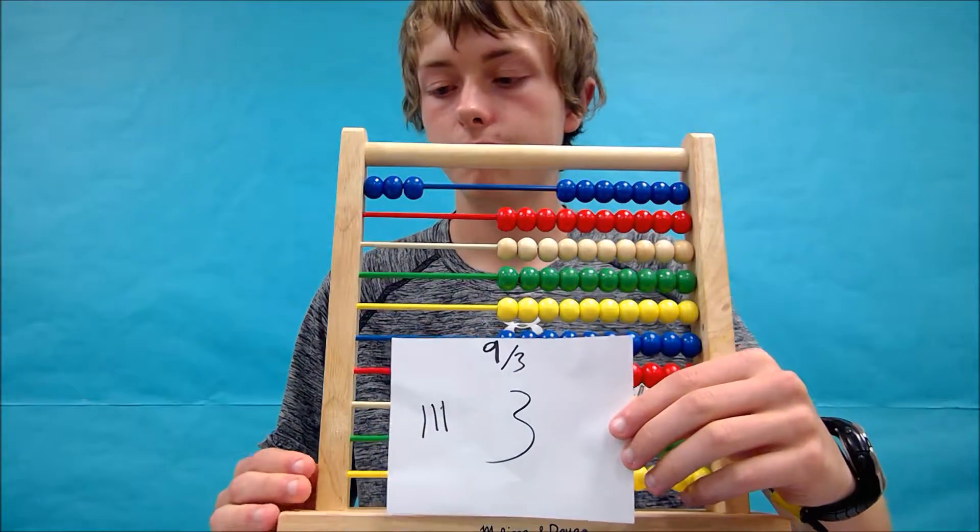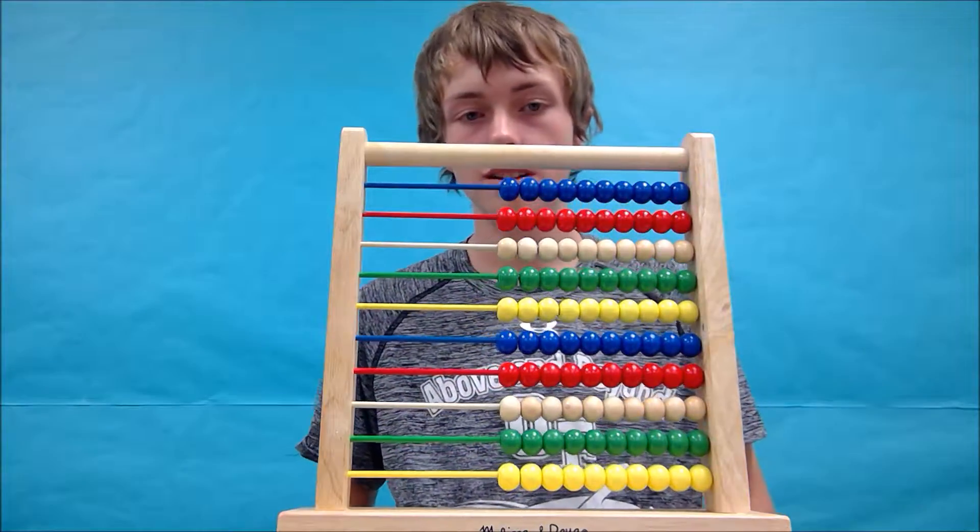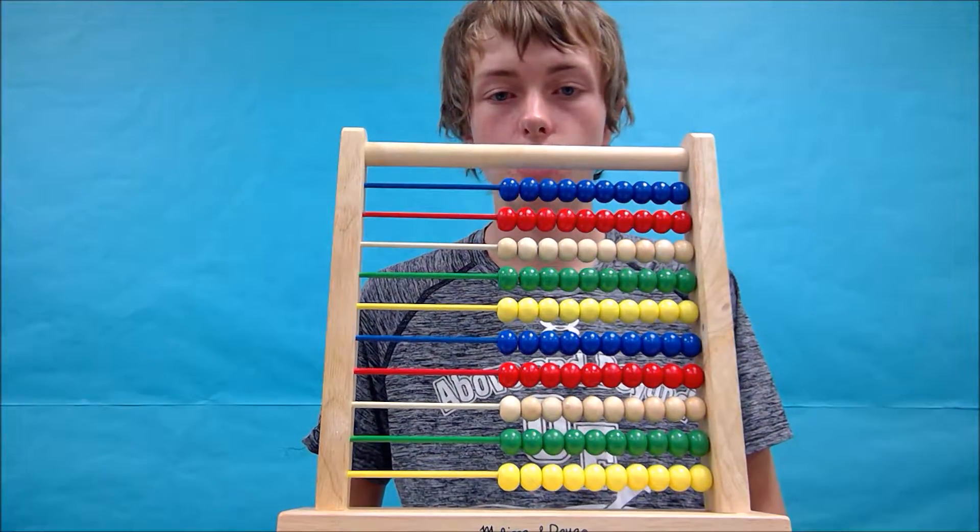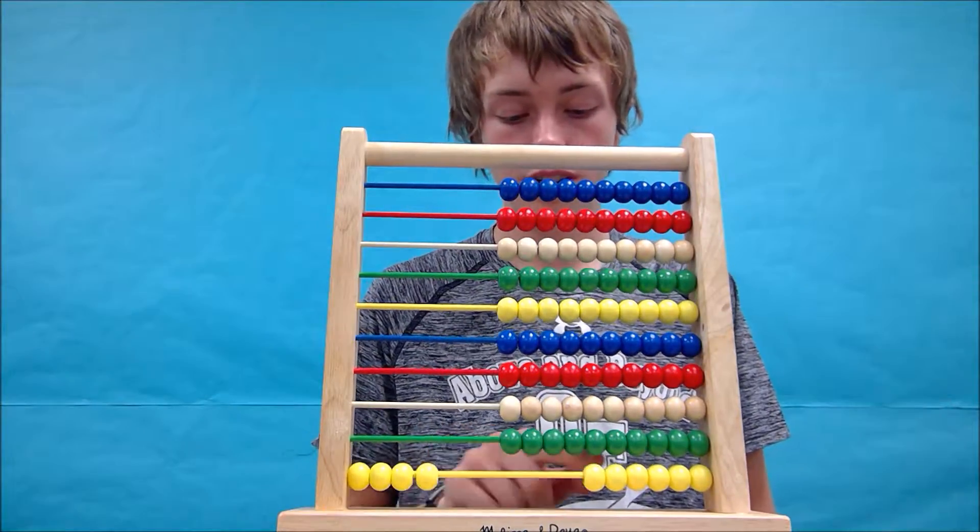Like we'd expect. Now we can clear out our abacus. And we can try again. Another one. Let's do 6 divided by 2. 2, 4, 6.